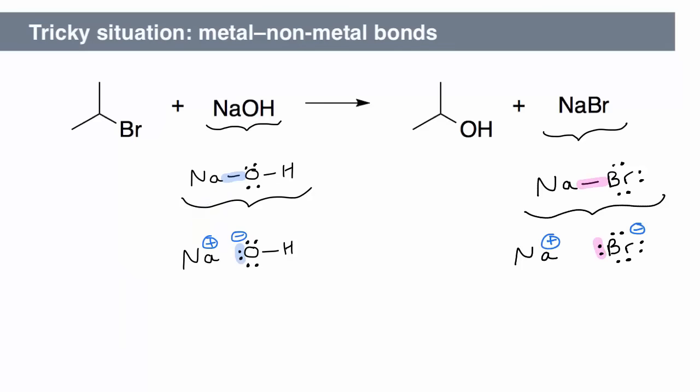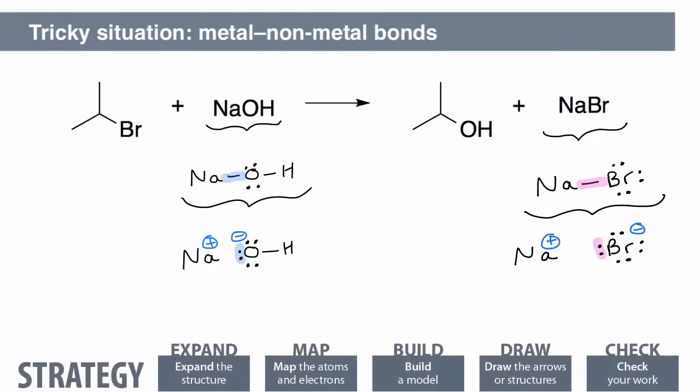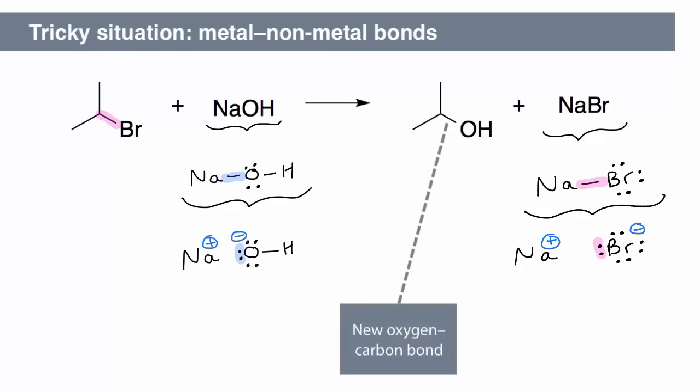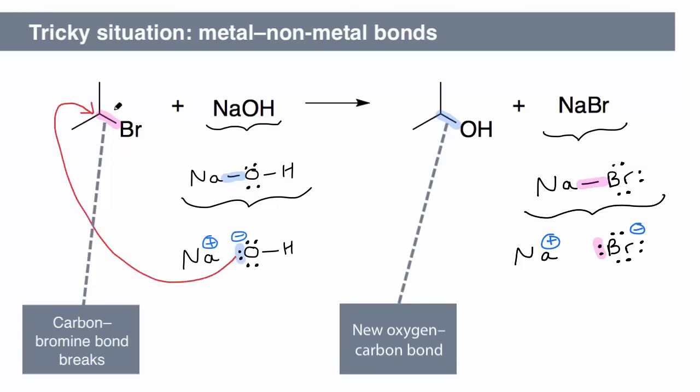Now we can repeat the strategy described earlier to draw the electron-pushing arrows. Try doing this yourself before continuing. The hydroxide-oxygen shares its electron pair to create a new oxygen-carbon bond. At the same time, the carbon-bromine bond breaks, forming bromide. Add in the electron-pushing arrows, check your work, and move on.